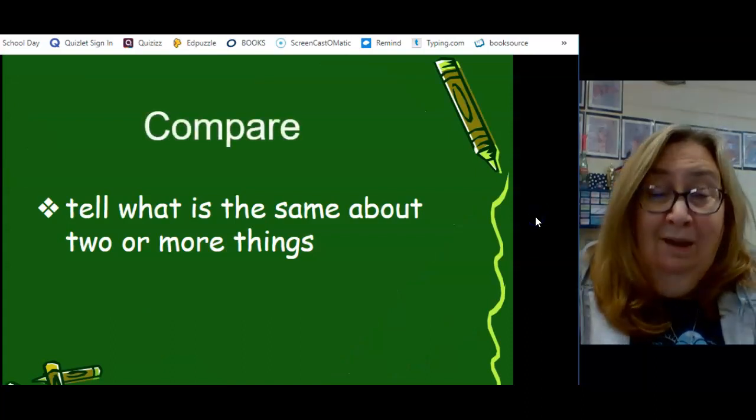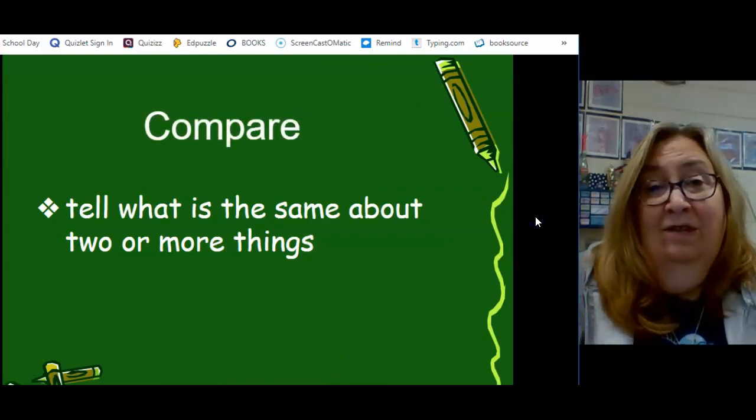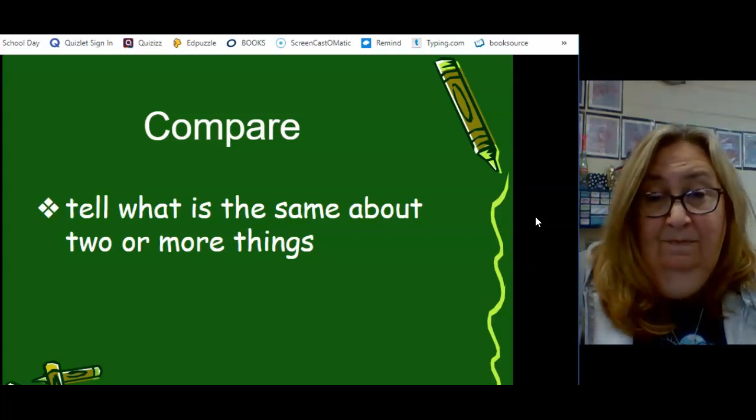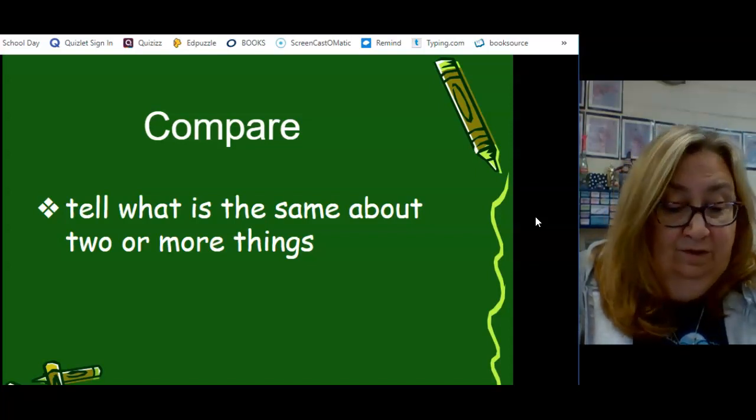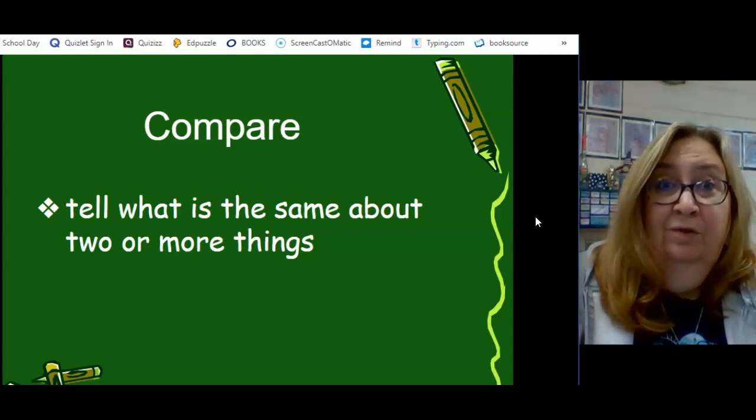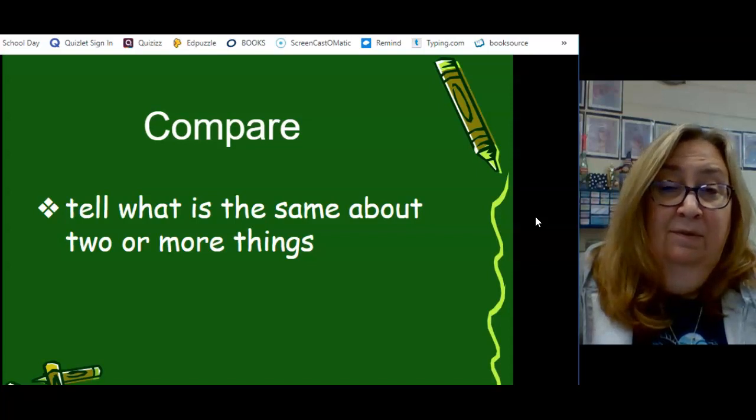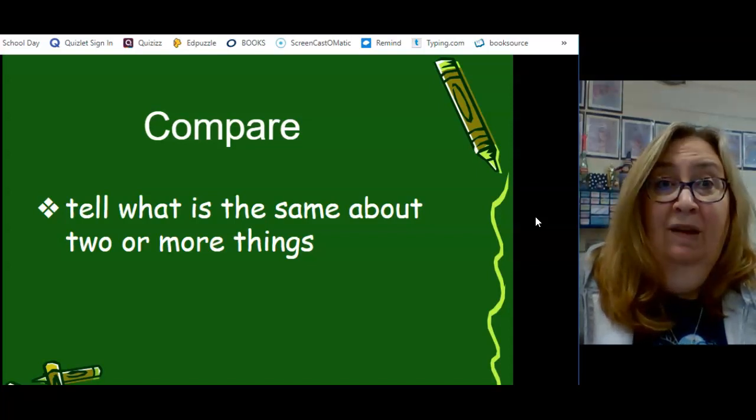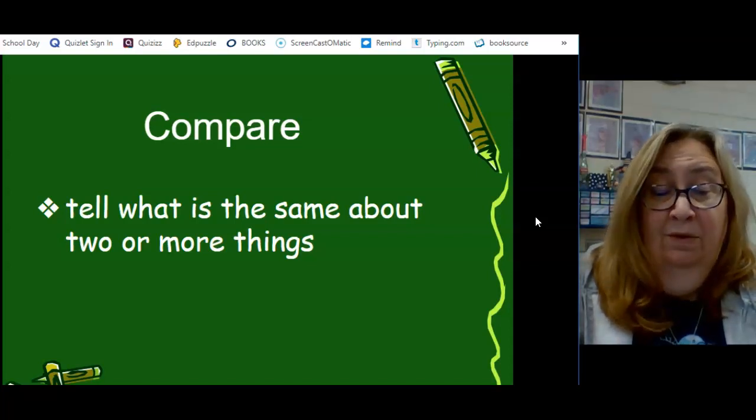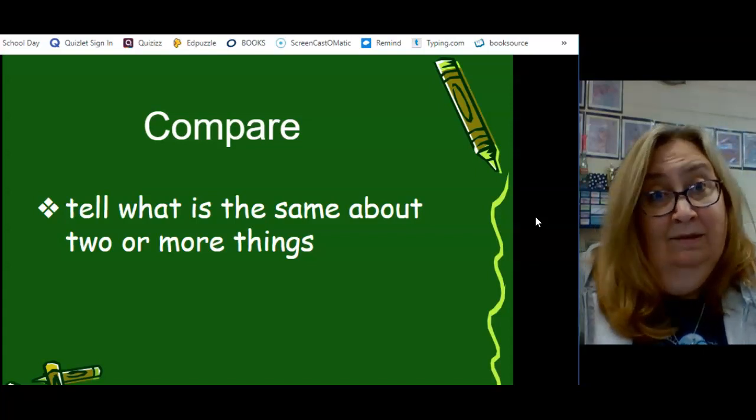When we're comparing, we're looking for the things that are the same. So, in The Lion, the Witch and the Wardrobe, there were four children: Lucy, Edmund, Susan, and Peter. And the children were the same in both the movie and in the book.